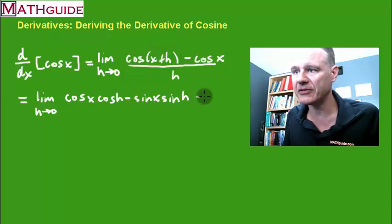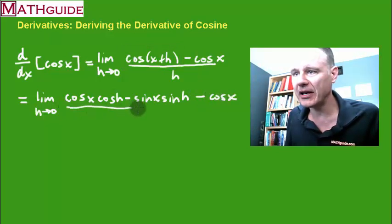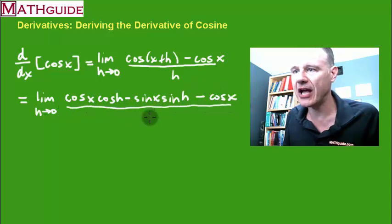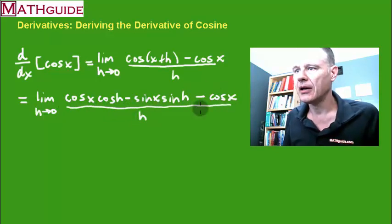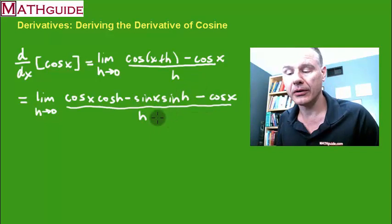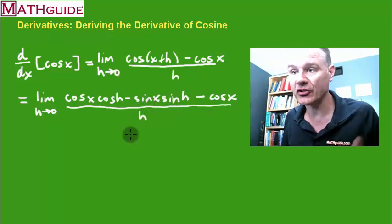And of course we still have this minus cosine of x. The whole thing—it's hard to make a straight line with this tablet. Now the algebra begins when we start to play around with this.